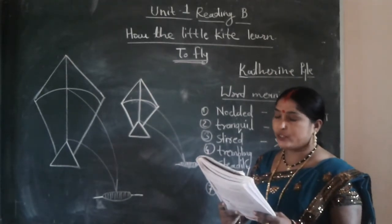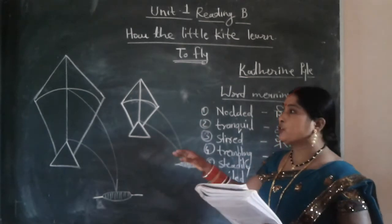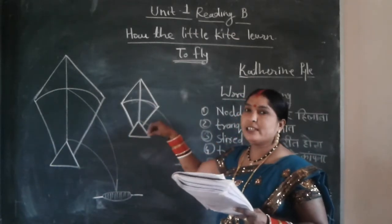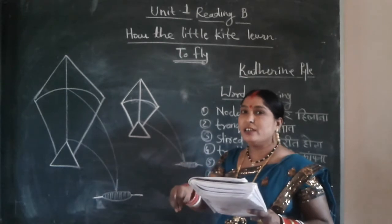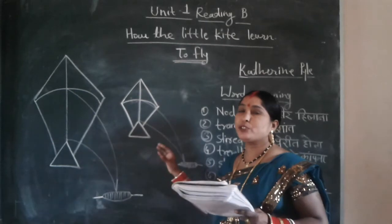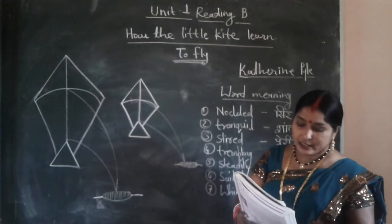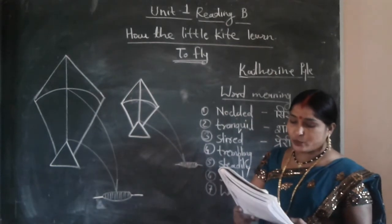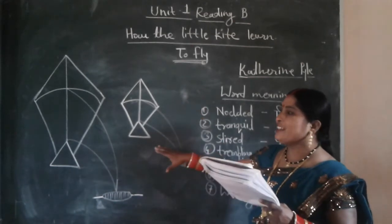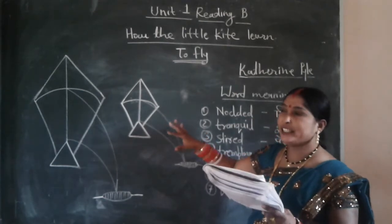Far below he could see the ground. The boys looked like small spots. When the little kite looked down the earth, then the boys are looking like the small spots. Chhote chhote nabbe ke saman, the boys are looking. Then she soared high over the sky and rested over the sky.